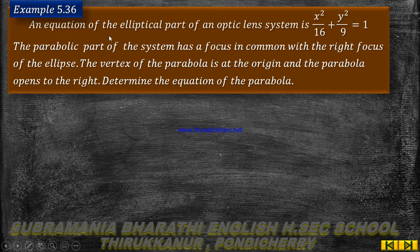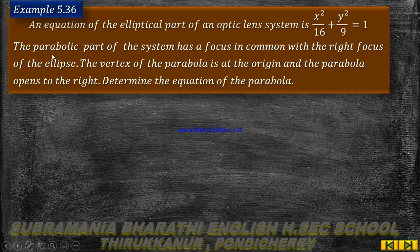First, let's look at what is being asked. An elliptical lens shape has been taken, and the equation for the elliptical shape is given. The parabolic part of the system has a focus in common with the right focus of the ellipse. The two foci are common on the right side.